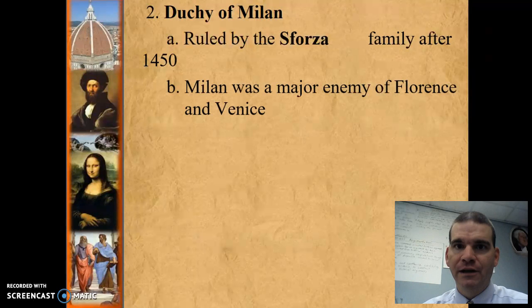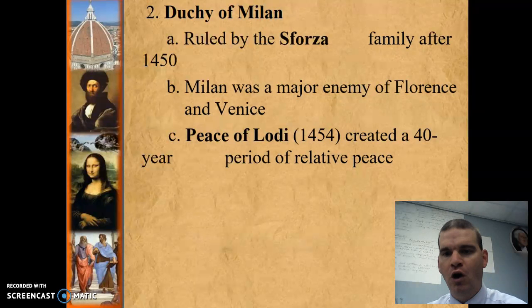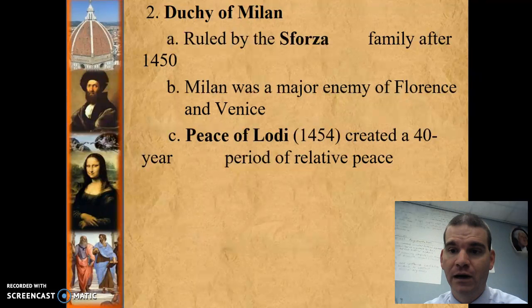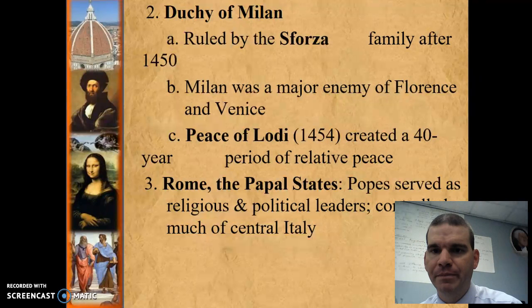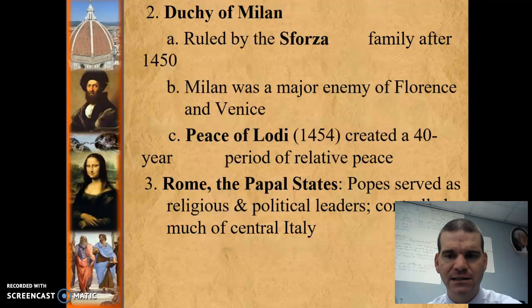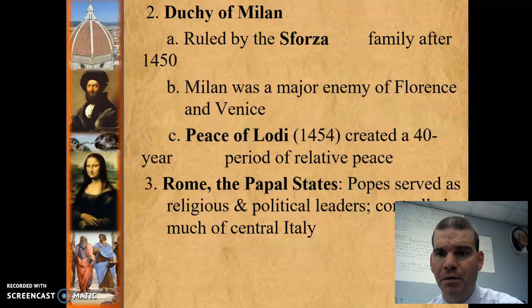The Sforza family was running Milan. They were very harsh rulers, and there was some question as to whether they should rule. Florence and Venice actually questioned some of their power and went to war for a while, but the Peace of Lodi created a relative peace that kept the Sforza family in power. As for Rome and the Papal States, the Pope served as both the religious and political leader — and we'll continue to see the Pope's role in the political arena moving forward for the next couple hundred years.